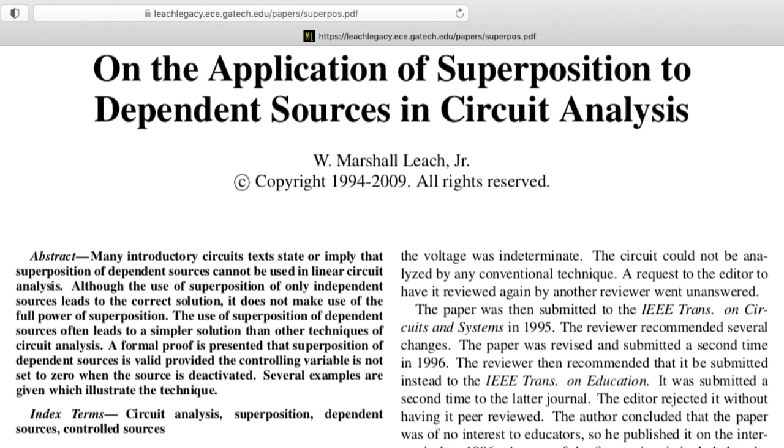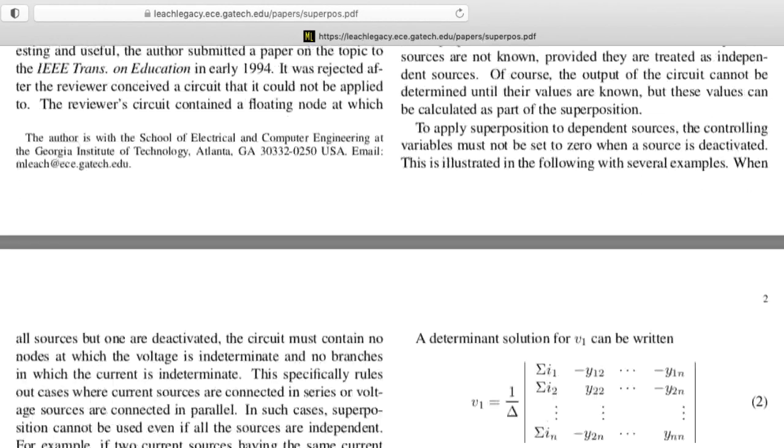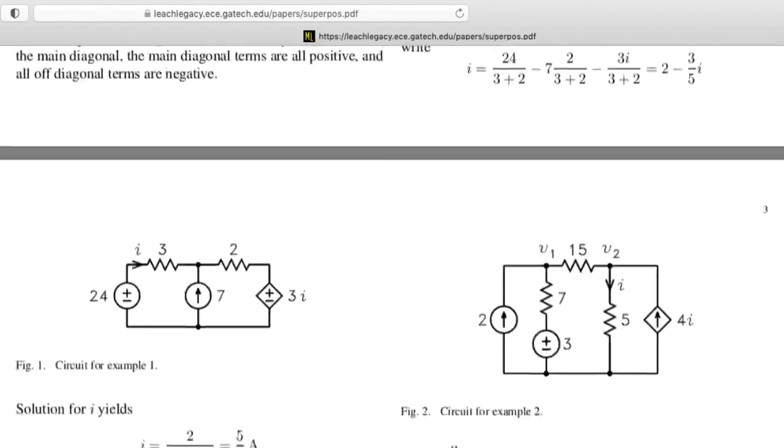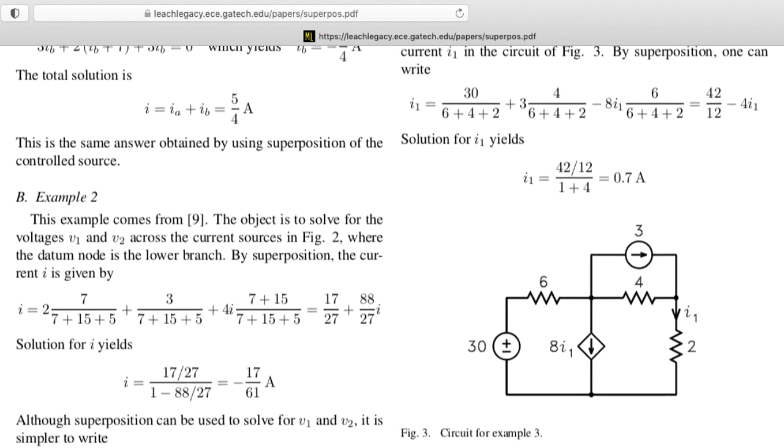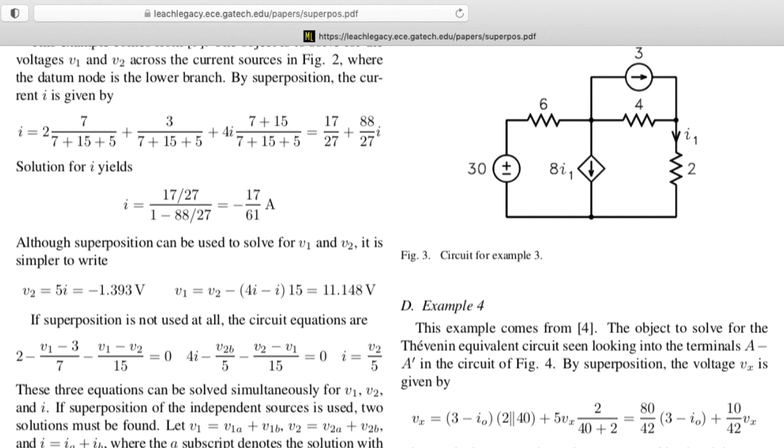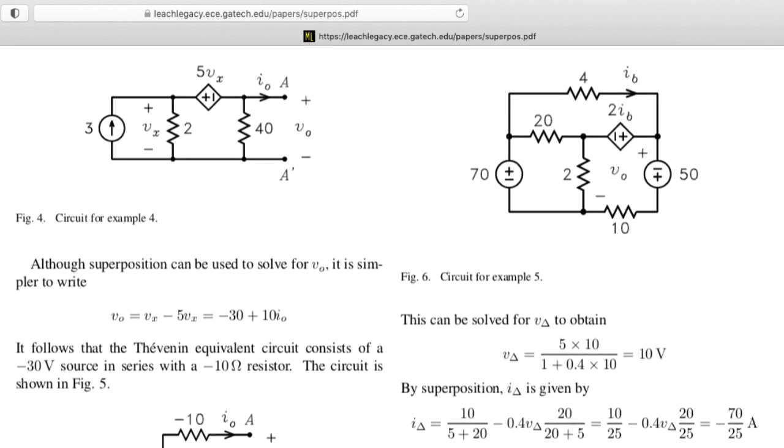Now, every introductory circuits textbook that I'm aware of will tell you that you can't use superposition with dependent sources. That's not true. You can use superposition with dependent sources. You just have to be careful with how you do it. And Marshall Leach wrote a great paper explaining how to do that. It is well worth your time to go through these examples.